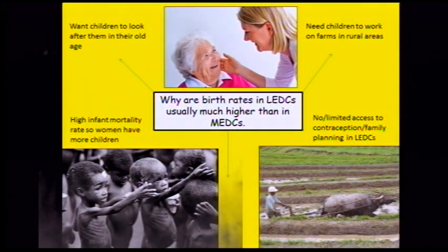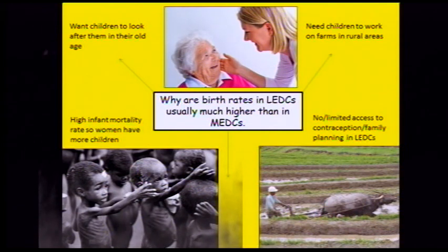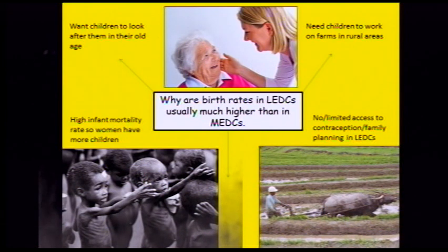Why are birth rates in LADCs usually much higher than in MEDCs? First, people want children to look after them in old age — sometimes that's a cultural thing. Children are needed to work on farms in rural areas to provide money for the family. There's limited or no access to contraception, so people can't control how many children they have. And there's a very high infant mortality rate, so women have more children to replace the children who will die.